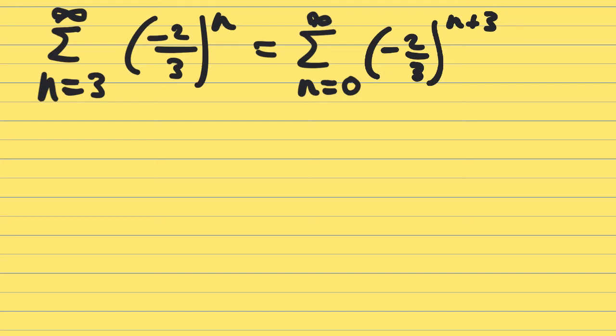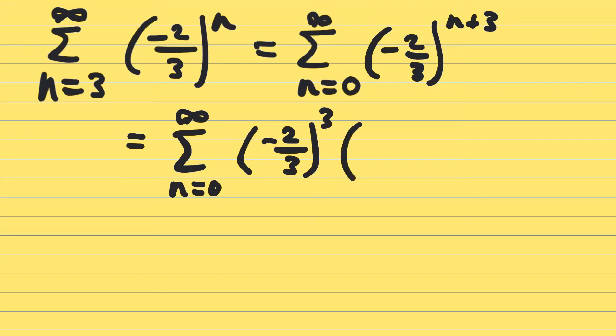A power of N plus three using exponent properties, you can split that up into negative two thirds cubed times negative two thirds to the N. And let me just jot that down. A to the M plus N is equal to A^M times A^N. So, I just use an algebraic exponent property.